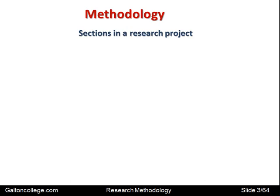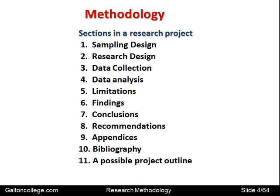We start with methodology. In a typical research methodology paper we would expect to find sections on: sampling design, the research design itself, data collection, data analysis, the limitations of the whole exercise, the findings, the conclusions, the recommendations, the appendices, the bibliography, and a possible project outline at the very end. We'd expect to find those headings to appear in the research project.